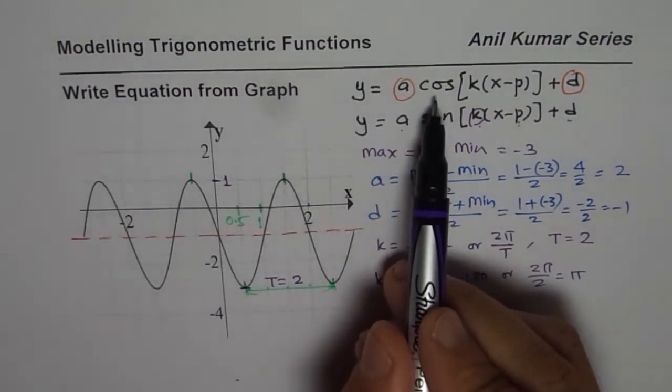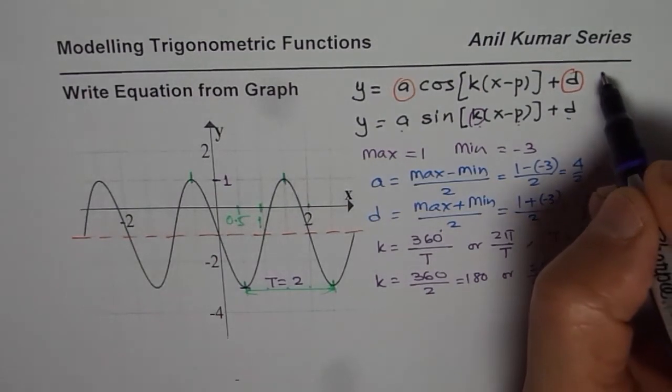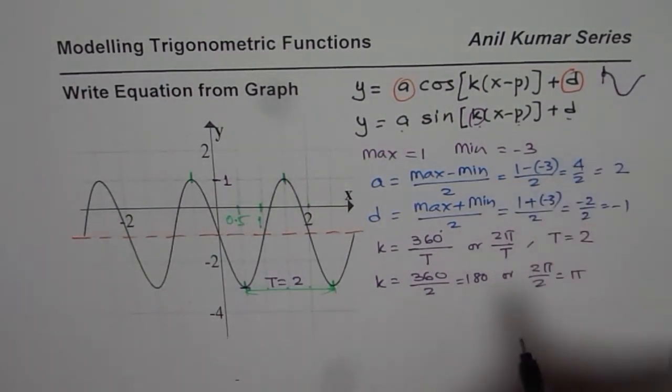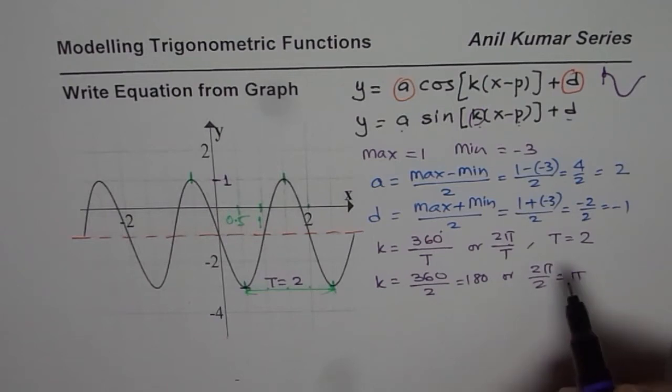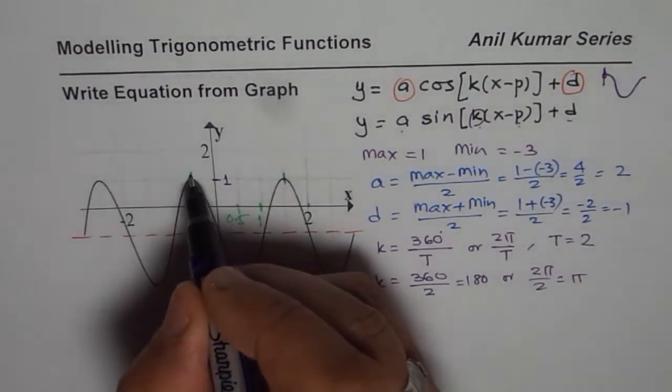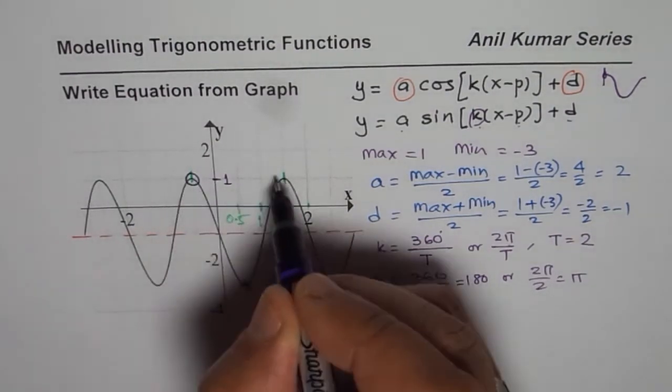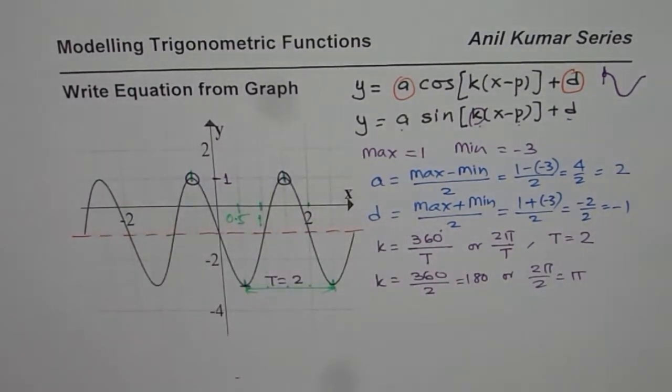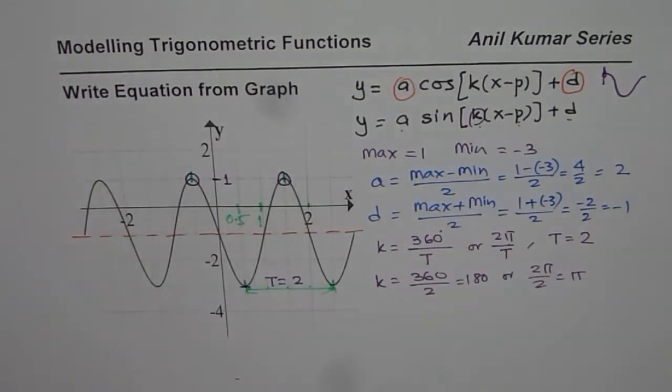For a cosine function, you know normally a cosine function starts with a maximum. So we are looking for the starting point, the maximum. So in this case we have 2 maximums very close. One is here, the other one is there. Both can give us different equations but they are exactly the same.